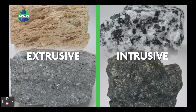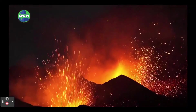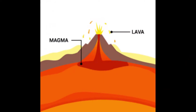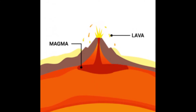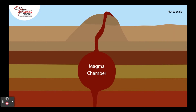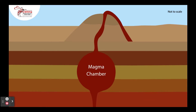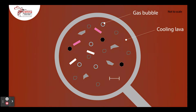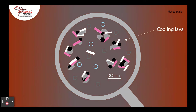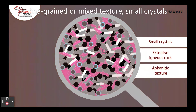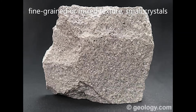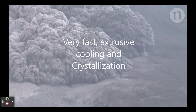Fast, extrusive cooling and crystallization. Molten, or melted, rock above the Earth's crust is called lava. Above the crust, touching the cool air, lava cools quickly, not allowing much time for minerals to form crystals. This gives them a fine-grained, or possibly mixed, texture with small, or different-sized crystals.